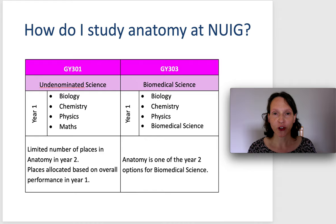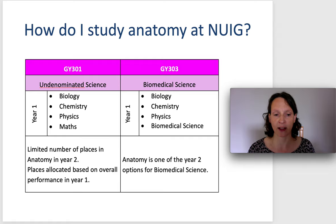If you're interested in the human body and would like to study anatomy, it's important that you have selected the correct modules in year one in order for this pathway to be open to you. If you are studying undenominated science GY301, you should ensure that you have selected biology, chemistry, physics and maths in year one. It's important to note that there are a limited number of places in anatomy in second year, due to constraints on the number of people we can have in our practical classes.